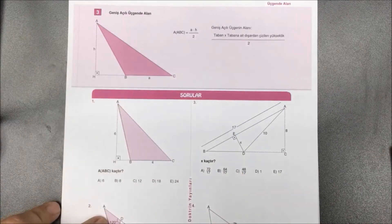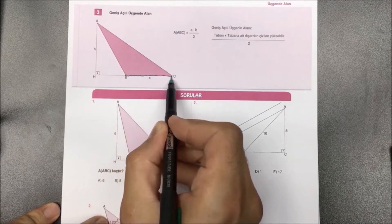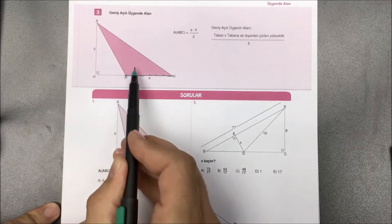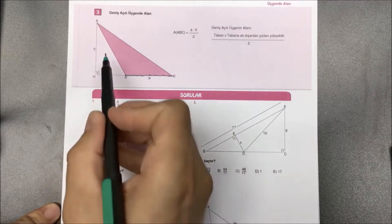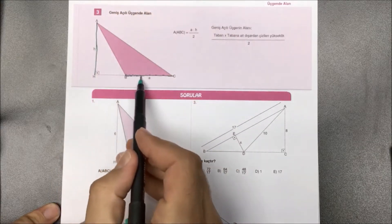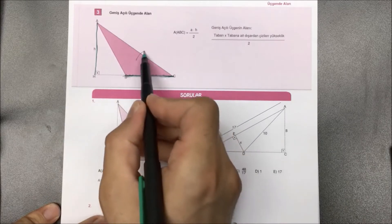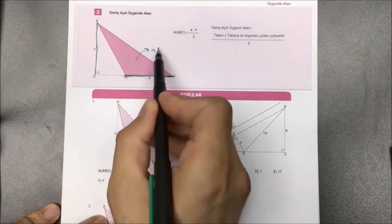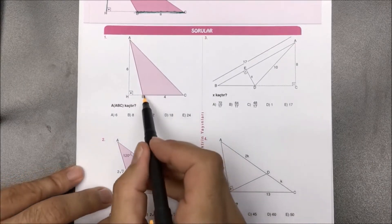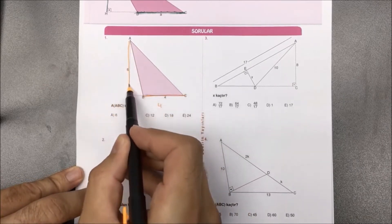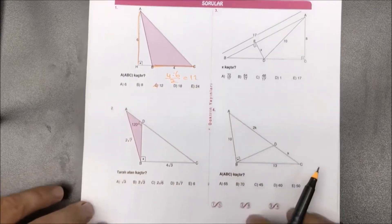Üçüncü türümüzdeyiz: geniş açılı üçgende alan. Öğrenciler en çok bunda zorlanıyor. Geniş açılı üçgende tabanı A kabul edersek yükseklik dışarıya düşer; A noktasının BC kenarına uzaklığı çizginin uzantısı üzerindeki H yüksekliğidir. Birinci soruda taralı üçgenin alanı kaçtır diye sormuşuz: taban 4, yükseklik 6. 4 ile 6'yı çarpıp 2'ye böleceğiz; 24 bölü 2'den aradığımız yanıt 12 olarak bulunur.